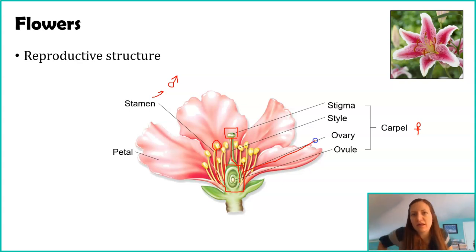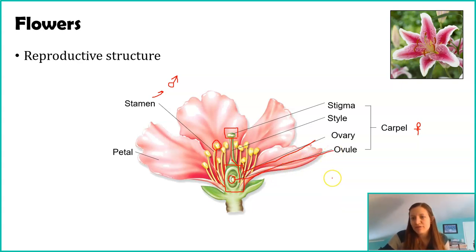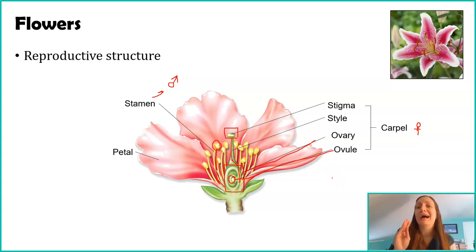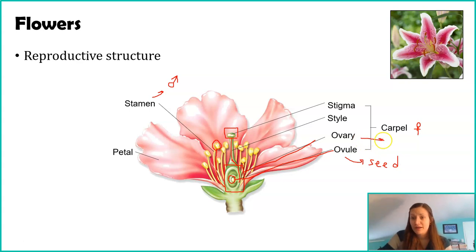The ovary is the much larger structure — honestly, it's similar thinking about a human female's ovary. Inside of that ovary structure is an ovule. You can think of the ovule as the egg — it's not exactly synonymous, but it's synonymous enough. Inside the ovule will be the egg. The ovule is going to give rise to the seed, and the ovary is going to give rise to the fruit. This picture shows one ovary with one ovule, but there can be plants with one ovary that has 20 or 50 ovules — it's really species-dependent.